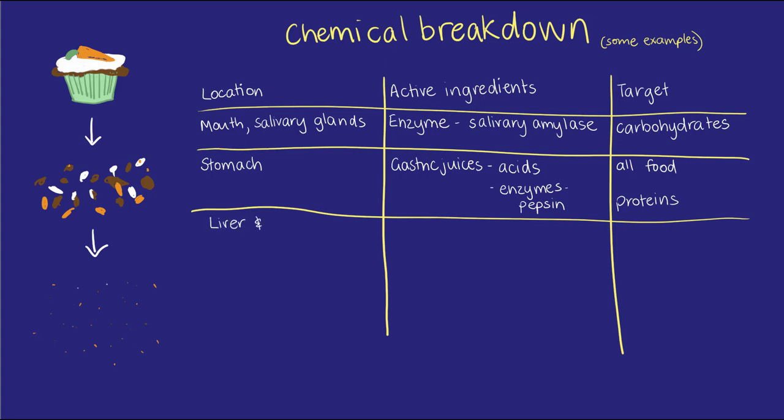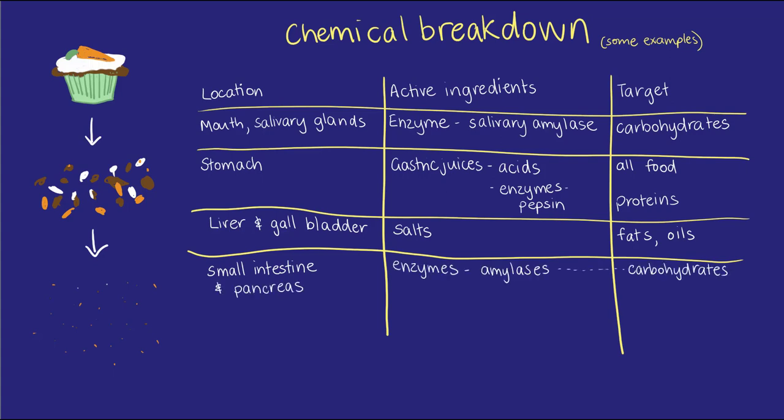The liver and gallbladder produce bile, which contains salts, which help break down fats and oils. The small intestine works together with the pancreas to produce and release more amylases, proteases, nucleases, which break down nucleic acids like DNA, salts, and lipases, which break down fats.